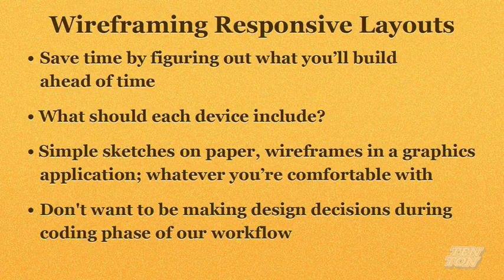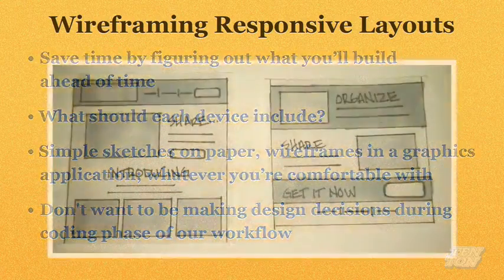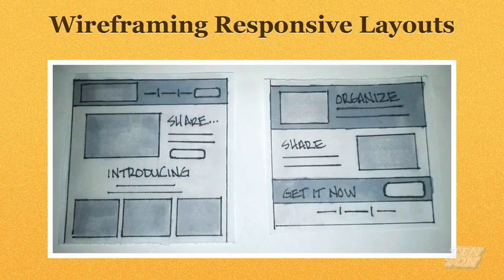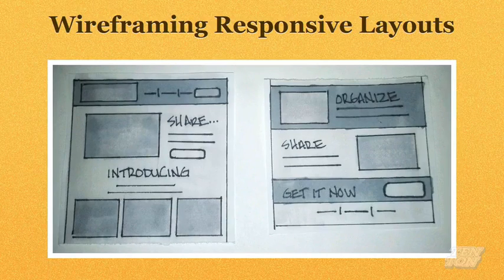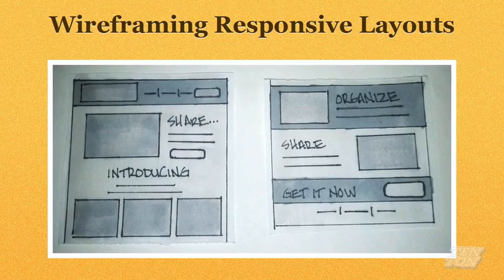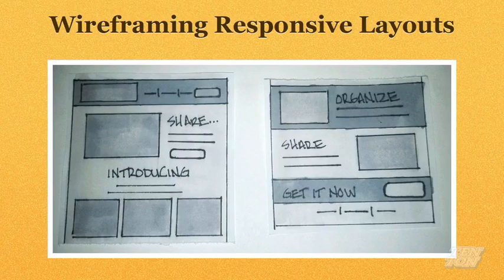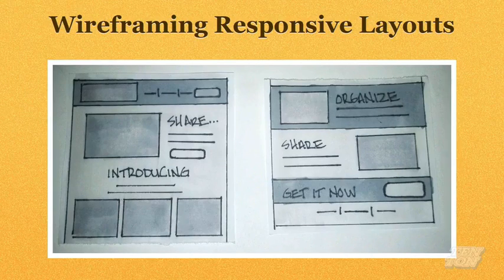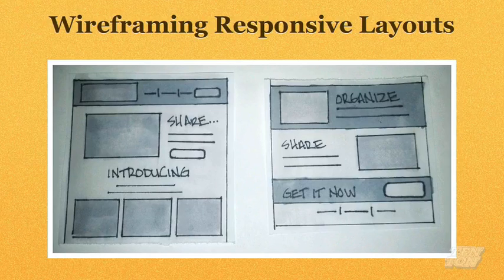I've wireframed out my three layouts — small, medium, and large. Let me show you what they look like. I just did quick sketches on paper to get my thoughts organized. We've already seen the final result we're going to build; this is my desktop device, and this is how it started as a rough sketch on paper. The left-hand side is the top half of the layout — running across we have the header, then the iPad graphic just to the left of the word 'share', the call-to-action button, and the introducing header with three graphics. On the right-hand side we have the organized section, followed by the share section, and then that call-to-action bar with a 'Get it now' button.